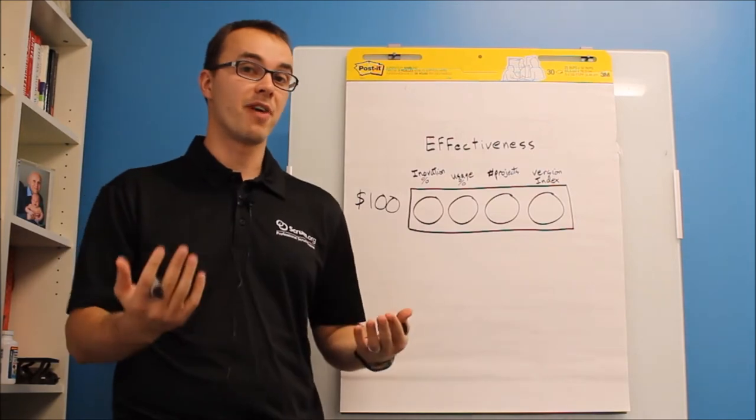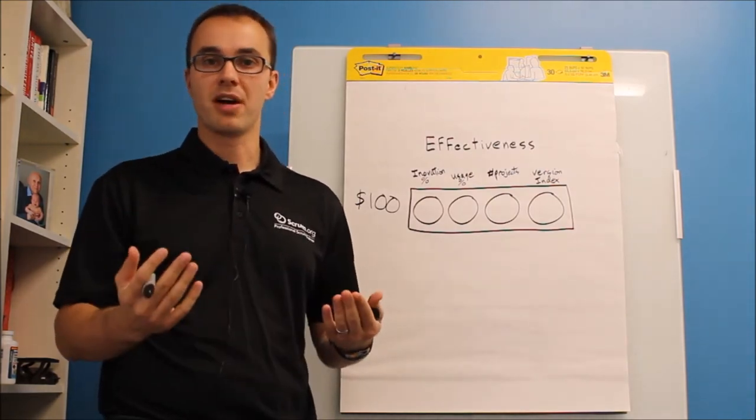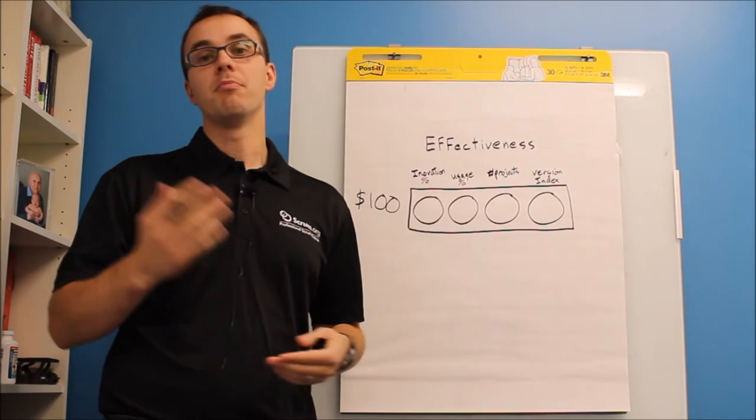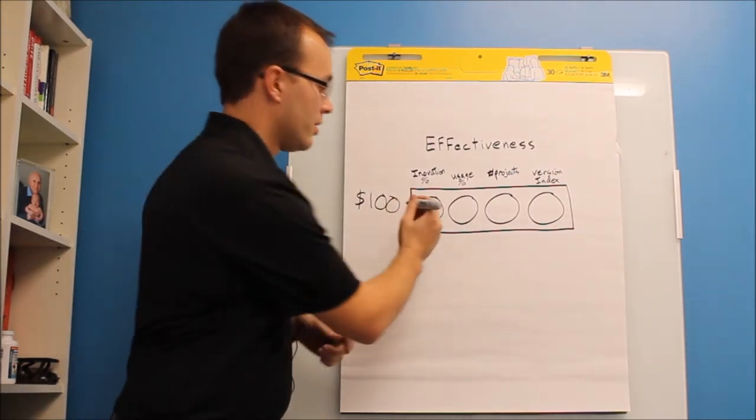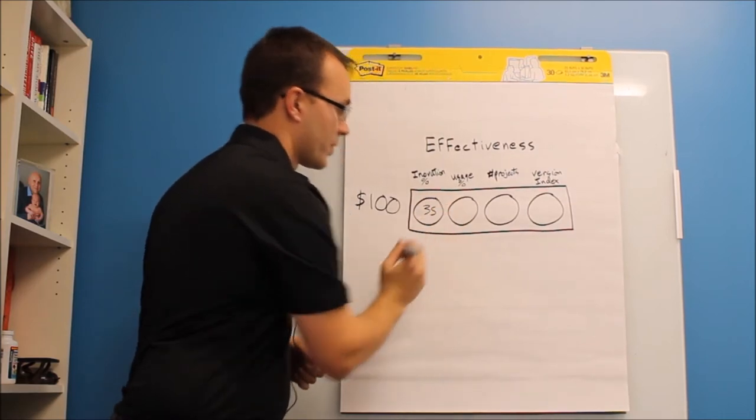So say you spend $35 on new features and about $65 on maintaining bug fixes, et cetera. This is kind of typical with what we see in organizations. So we'll put a 35 here.